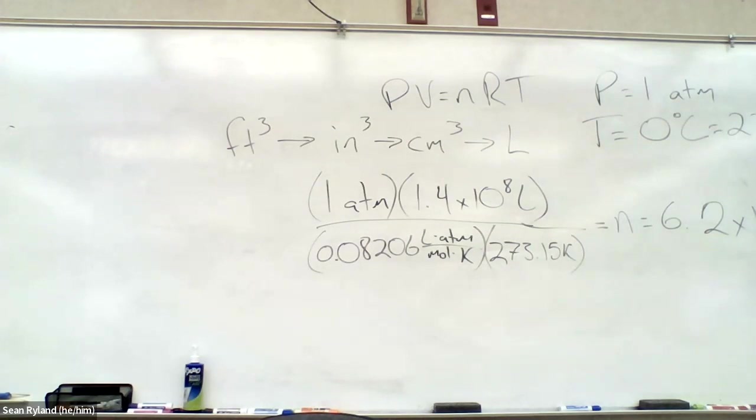Let's type it in. Make sure it's not just a calculator error. 1 times 1.4e to the 8 over 273.15 over 0.08206. Whoa, num lock was not turned on. 1.4e to the 8 over 273.15 over 0.08206.